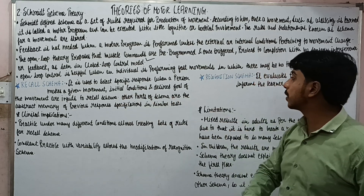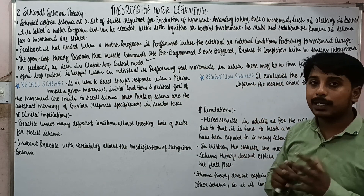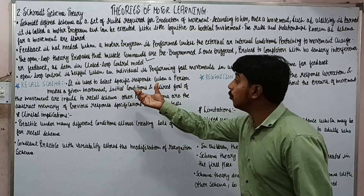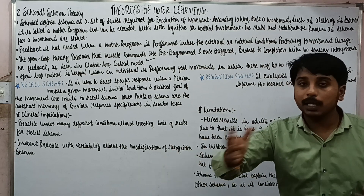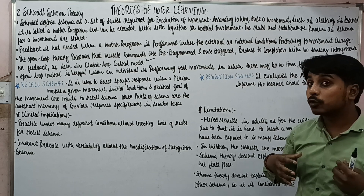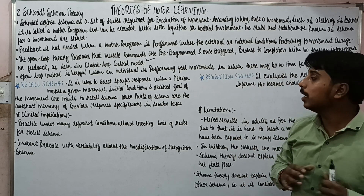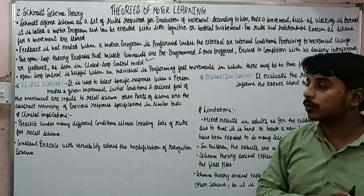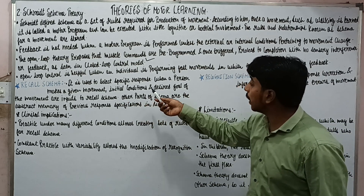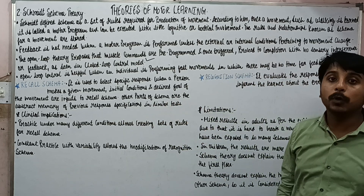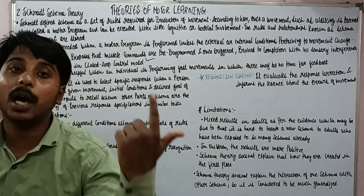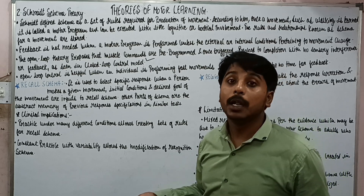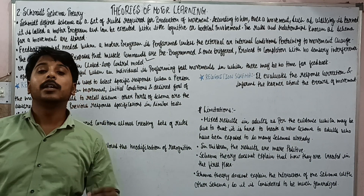Schema is of two types: one is Recall Schema and the other is Recognition Schema. From the name itself, Recall means we are going to recall which movement we are going to produce. It is used to select the response. For example, there is a glass on the table in front of me — so I will think about moving my arm forward and lifting the glass to drink water. That is the Recall Schema: I recalled that last time I lifted the glass with my hand, so now I will go and lift the glass again.